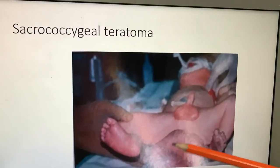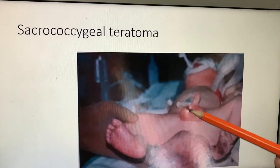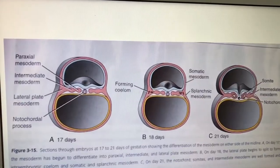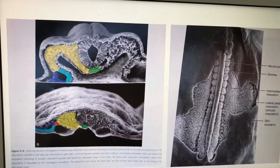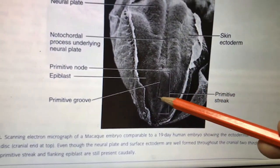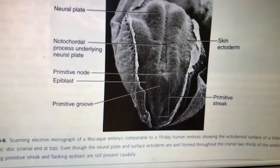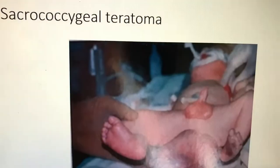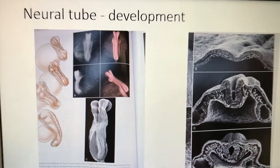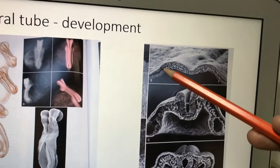This is sacrococcygeal teratoma. Why does it occur? The primitive streak should disappear completely. If it doesn't disappear completely, the caudal end accumulation of cells leads to sacrococcygeal teratoma.